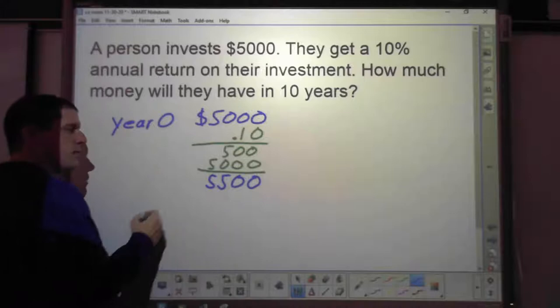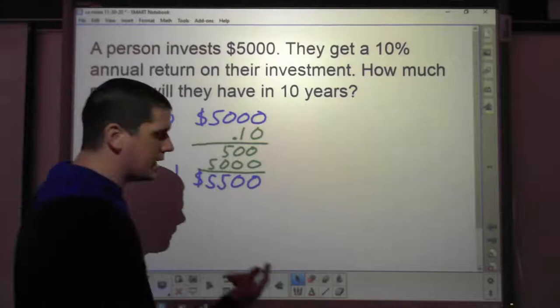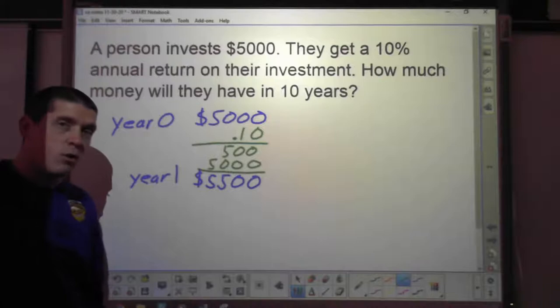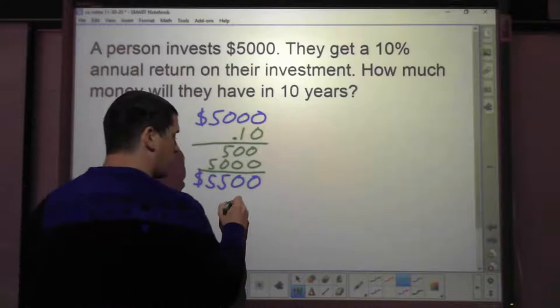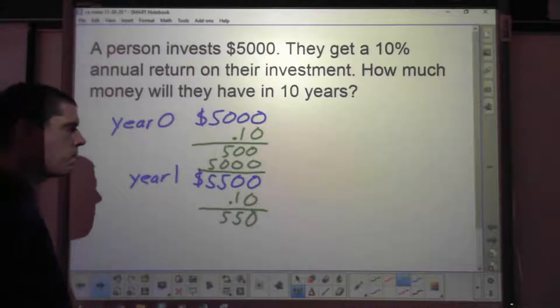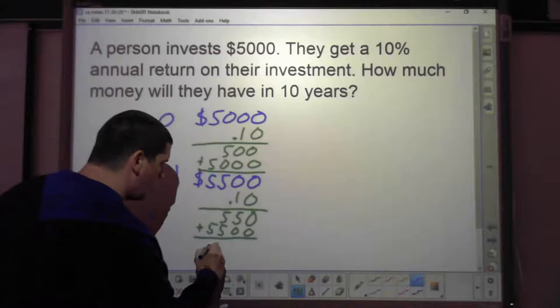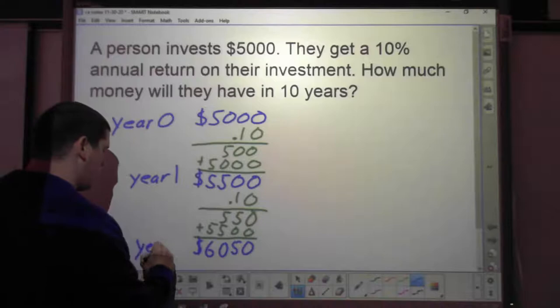So what that means is we have to look at this year by year. We have to break this down and say, okay, well, at year zero, the beginning, that's what we call it, we have $5,000. So we need to figure out 10% of that, 0.10, which we could just have 0.1. So we end up with $500. But now we need to add that $5,000 back in and we end up with $5,500.